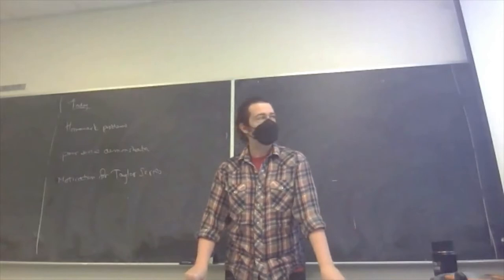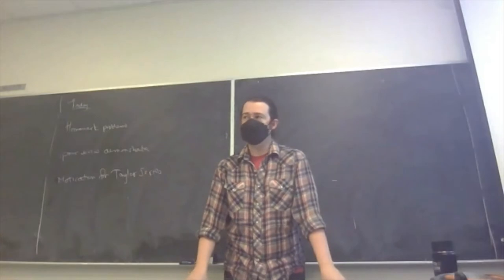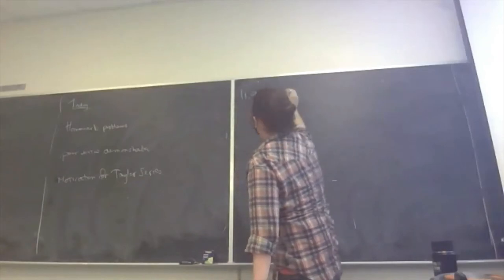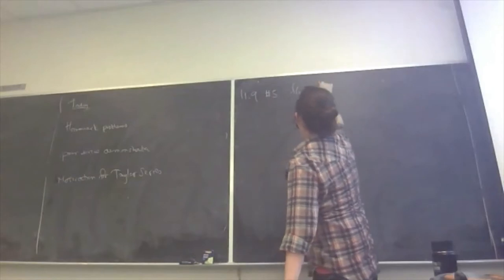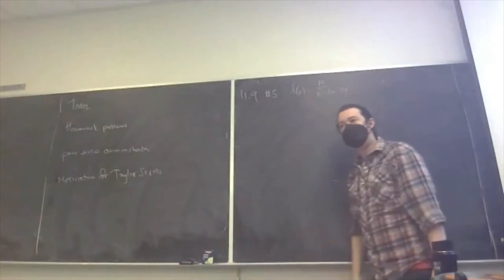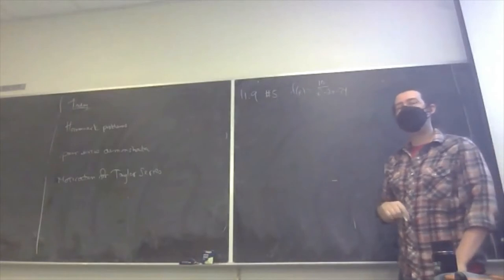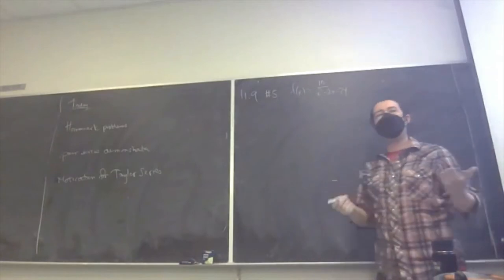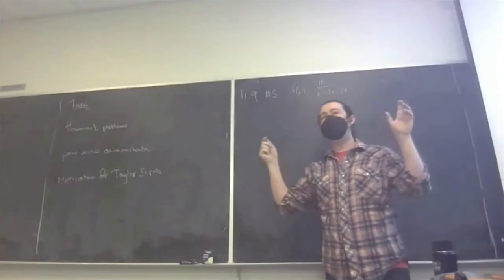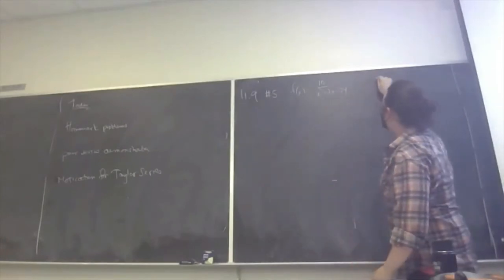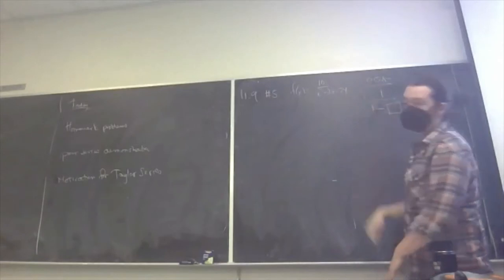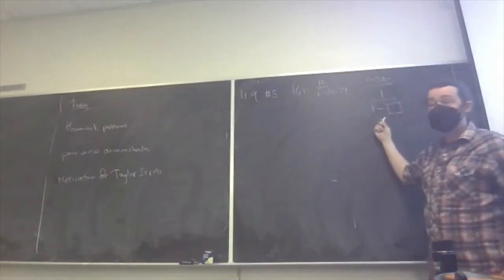One more question — question five. The function was 10 over x squared minus 2x. Every time I see something like x squared minus 2x, I think I'm going to be asked to complete the square. In this chapter, the only way you know how to build a power series is with the pattern: 1 over 1 minus something. If I can get it into that form, I can make a power series.